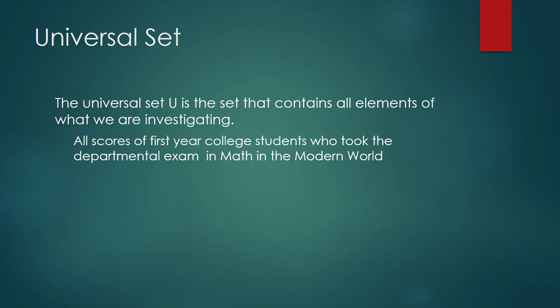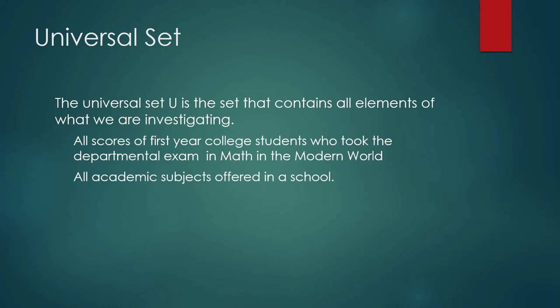The universal set in this case would be all scores of all students who took the departmental examination. Your school regularly publishes a catalog of subjects — listed inside that book are the subjects available in the university, the subjects you study for your course. The list of all subjects listed in the academic catalog is an example of a universal set.